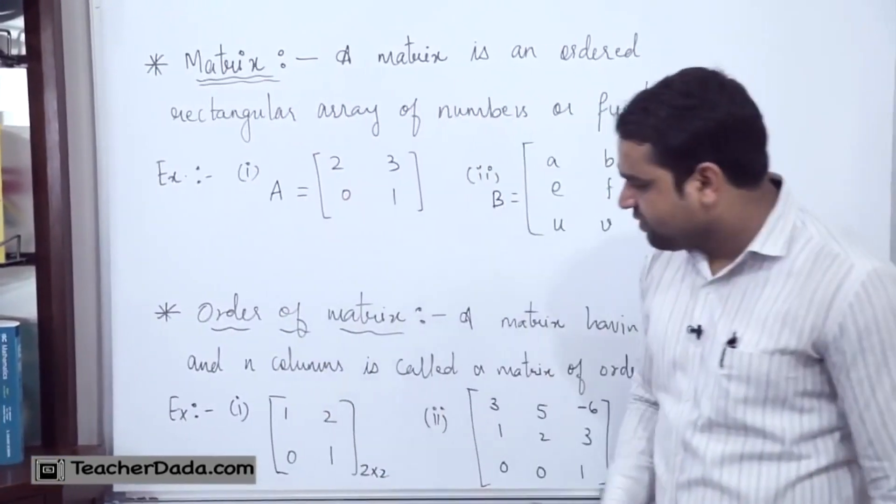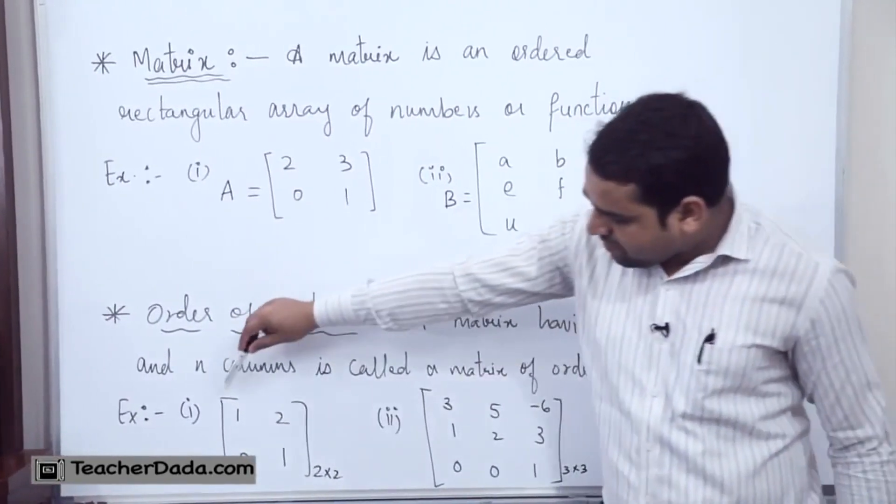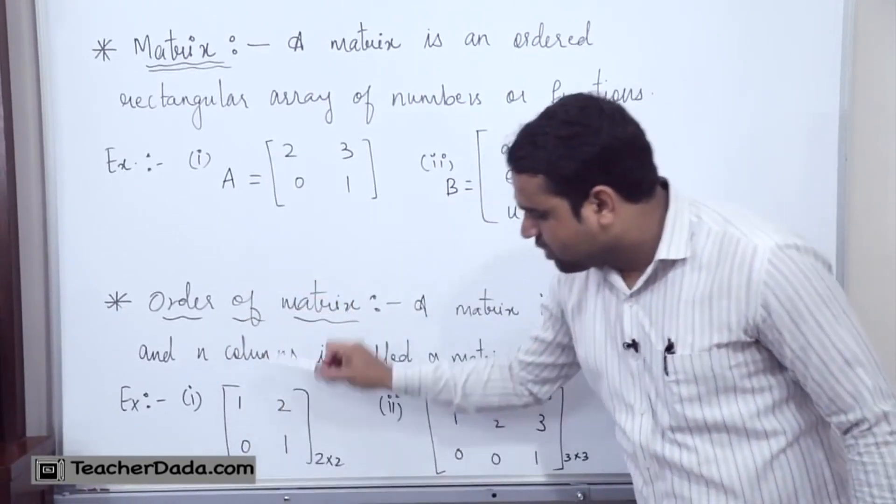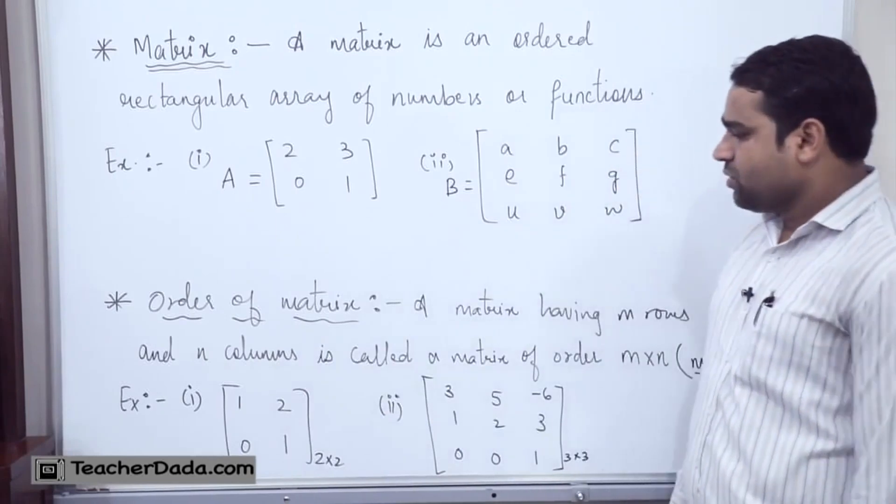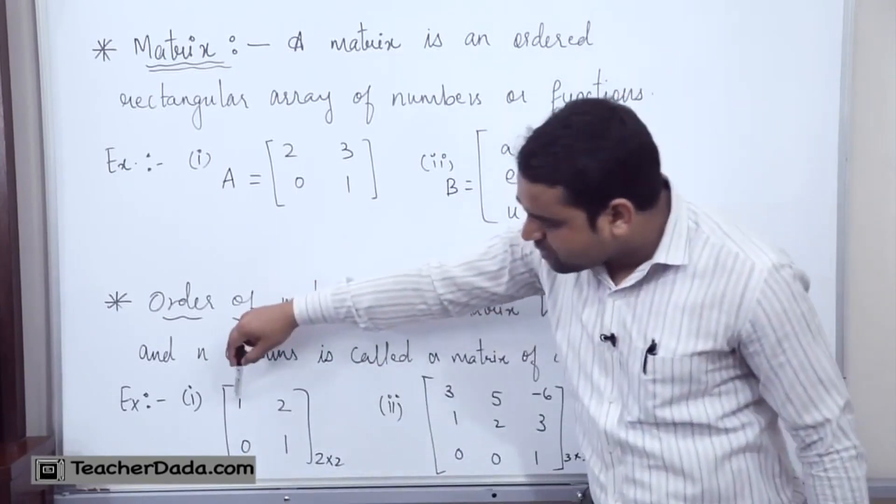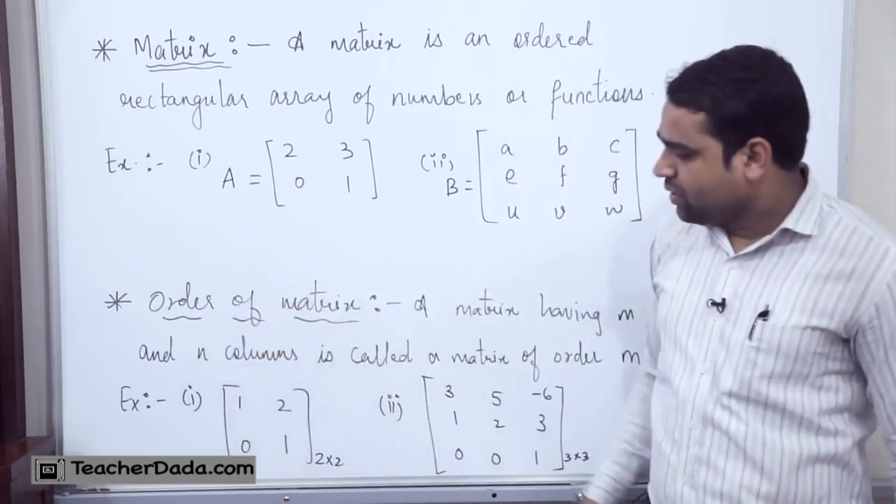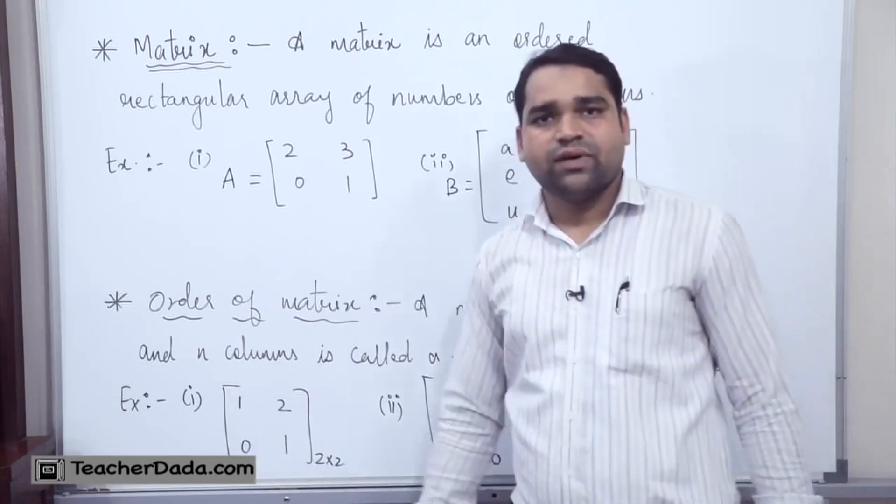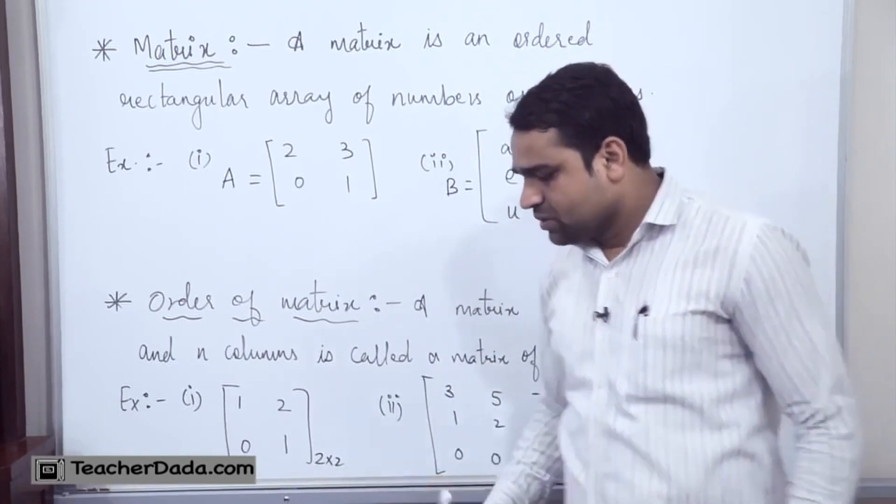We have two examples also I have written on the board. See, this is the number of rows and this is the number of columns. The number of rows and number of columns define the order of this given matrix. How many rows we have here? One, two. How many columns we have here? One, two. That is why I have written the order of the matrix, that is two by two.